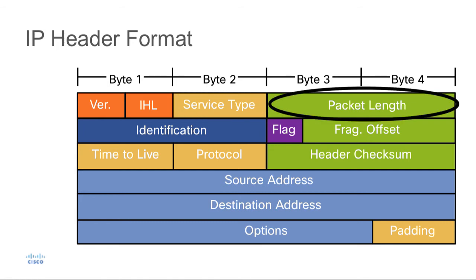The next field is the packet length. This is the entire length of the packet — it includes the 20-byte IP header as well as all of the user data encapsulated inside. This field is 2 bytes long, and the maximum size that we could ever see an IP packet being would be 65,535 bytes.